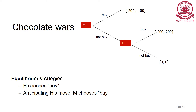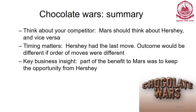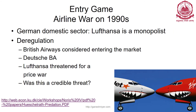The equilibrium strategy is Hershey choosing to buy, knowing that anticipating this move, Mars should also choose to buy. The key learnings: think about your competitor — timing matters. Who is given first chance and who is given second chance can be very important. Part of the benefit to Mars was to keep the opportunity away from its competitor. Let's take another example: an entry game — the airline war of the 1990s.